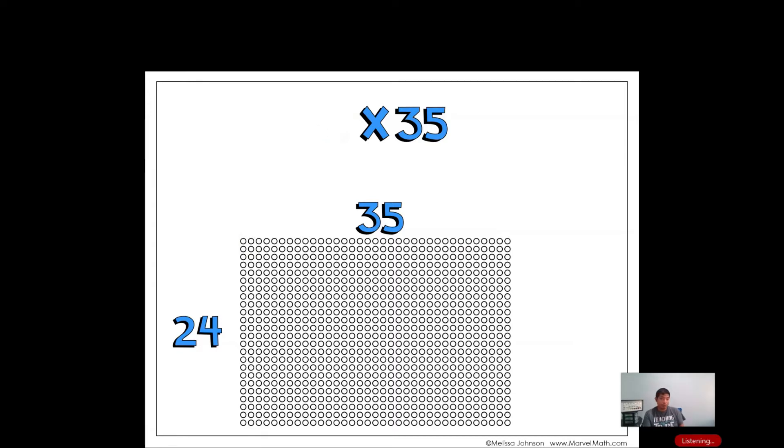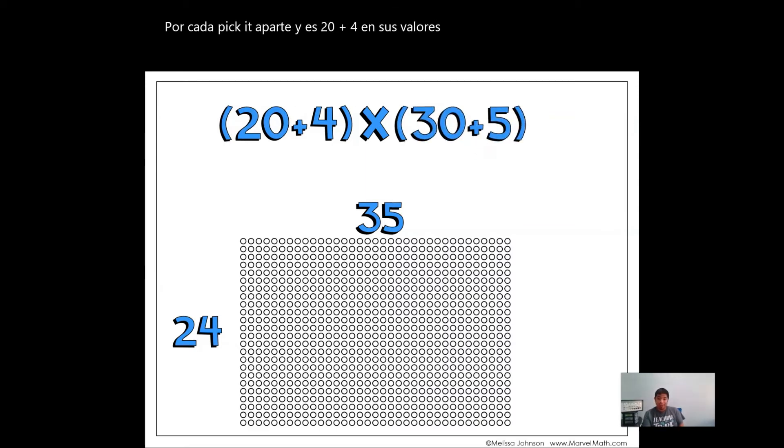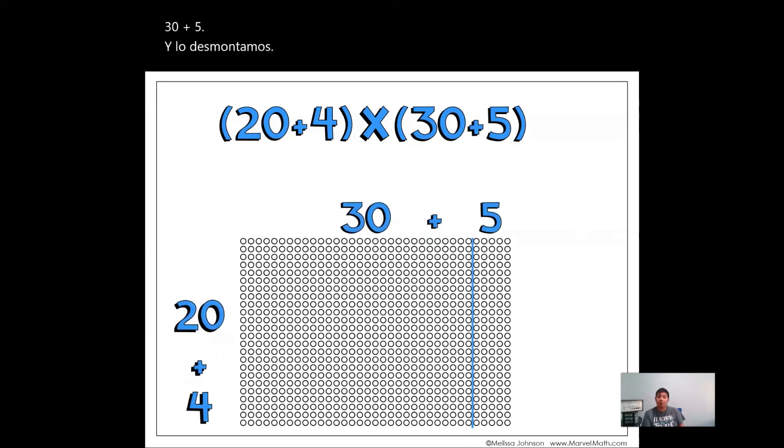We take 24, we break it apart, and it's 20 plus 4 into its values. We take 35 and we break that apart, and it's 30 plus 5. And we just take them apart. 20 plus 4. What does this look like? Interesting. It looks like the area model.